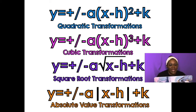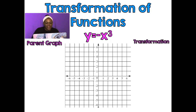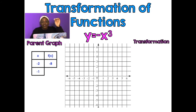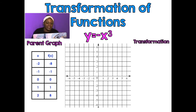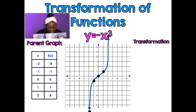Let's talk about transformation of functions. Y equals negative X cubed — that's the parent function. You should have already come into this lesson knowing what the parent functions were like. So the points are: negative 2, negative 8; negative 1, negative 1; 0, 0; 1, 1; 2, 8. I'm going to plot those points on my graph. I notice there is a negative in front of X cubed, and I know that the negative is a reflection across the X-axis.